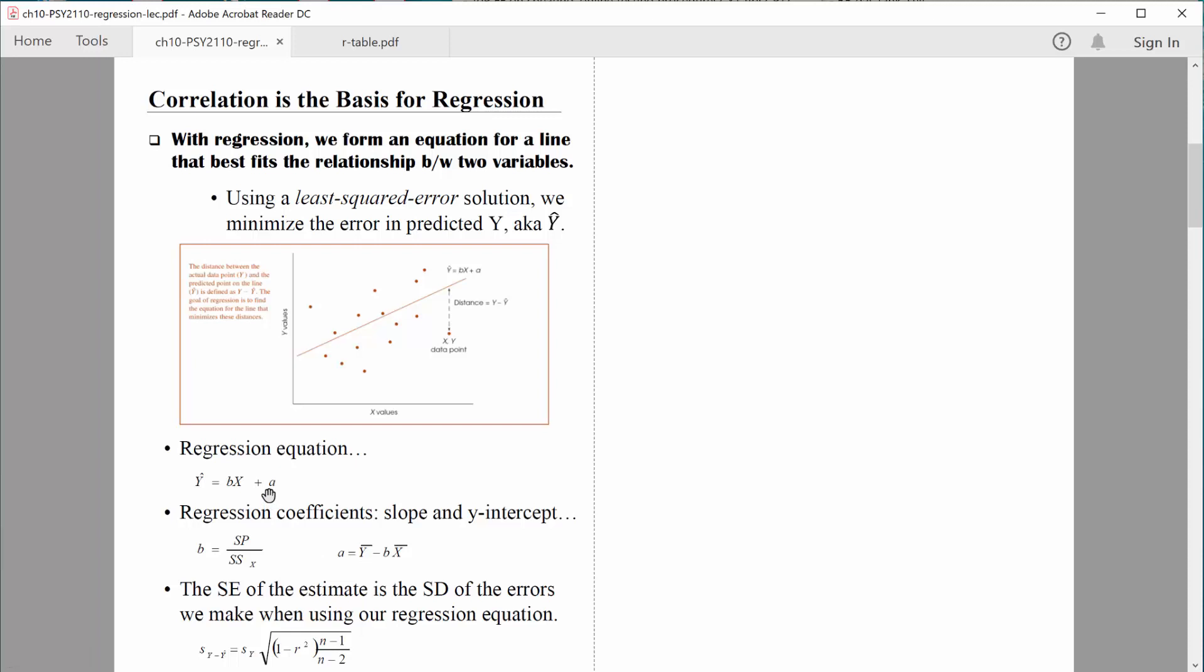The last thing that we compute when we're dealing with regression is the standard error of the estimate. And the standard error of the estimate is essentially the standard deviation of these errors that we make along the regression line. Remember what I'm talking about when I'm talking about errors. Look at this person right here. This person did pretty darn well in high school. And the regression equation would predict that this person would do really very well in college also. But this person right here actually didn't do so great in college. Do you see how the regression equation over-predicted how well that person would perform? That's an error right there.